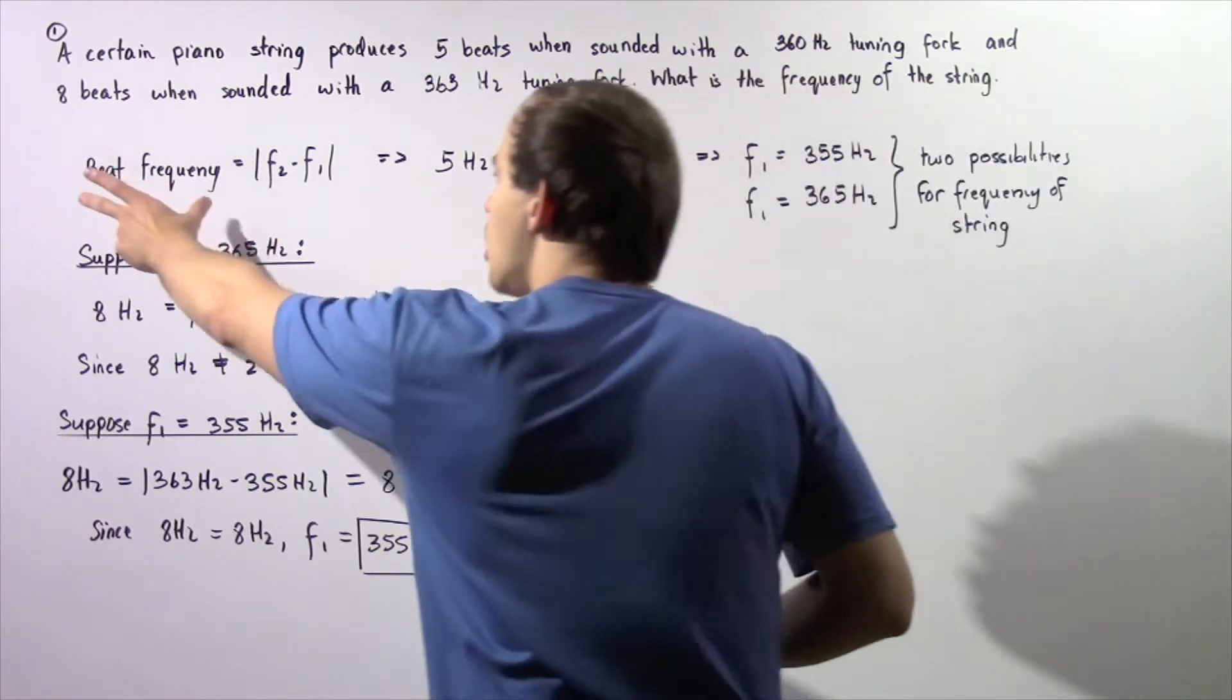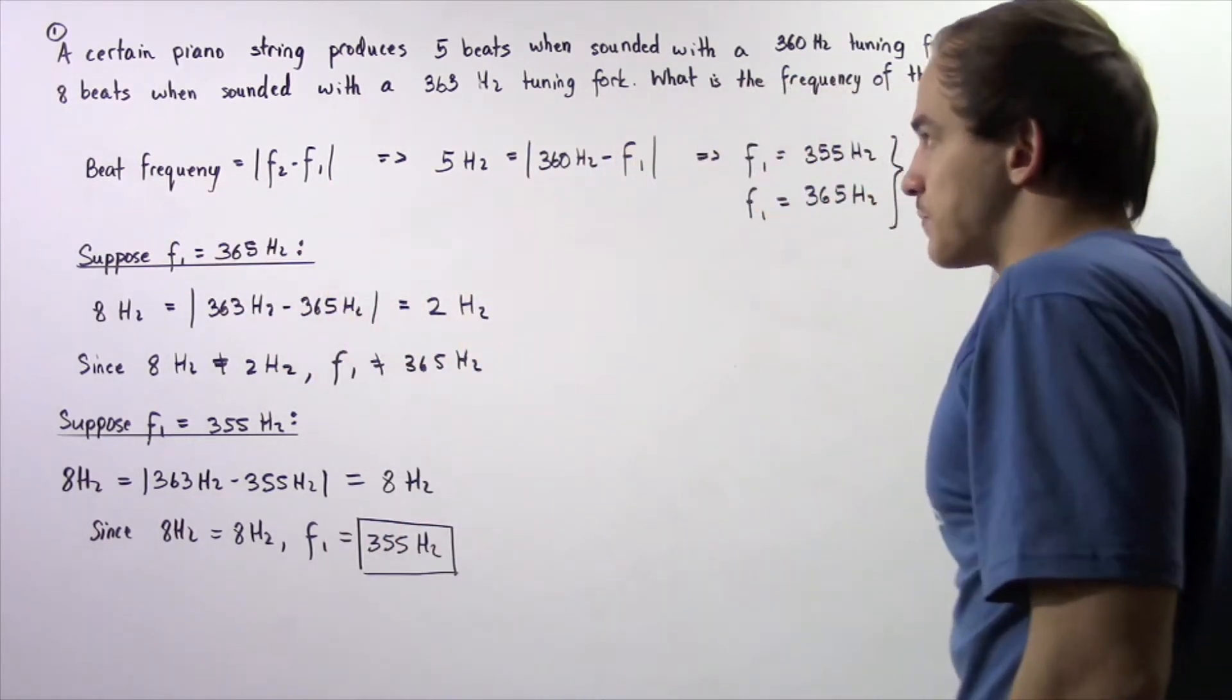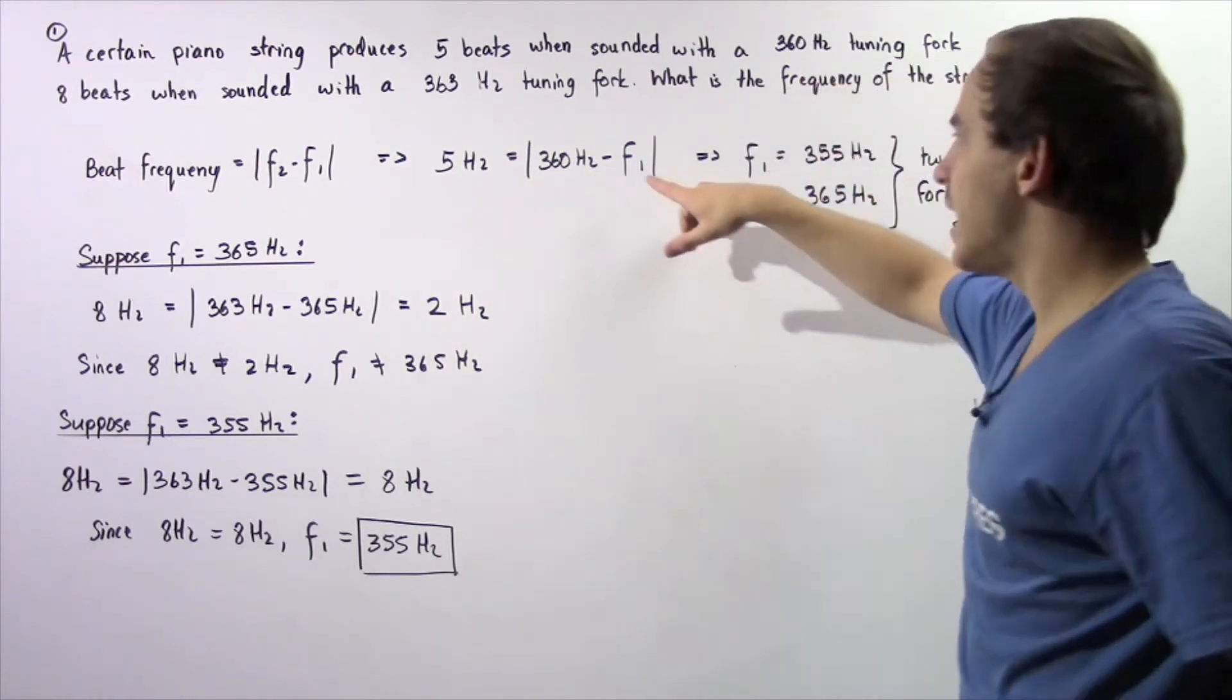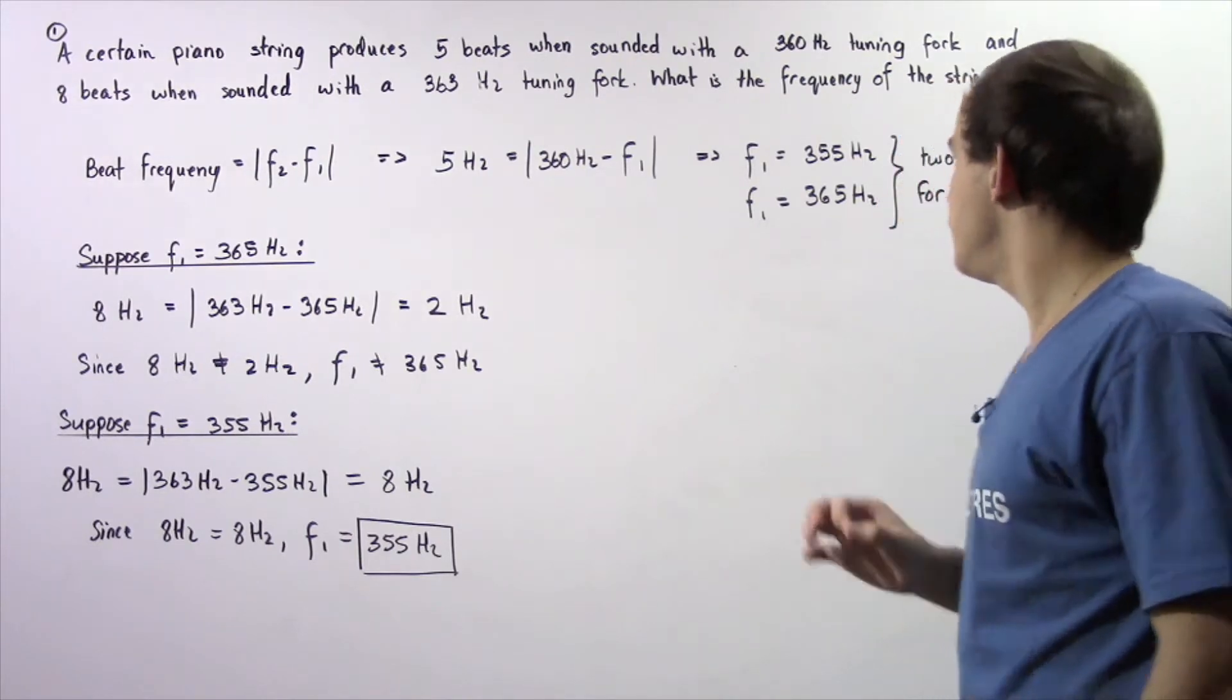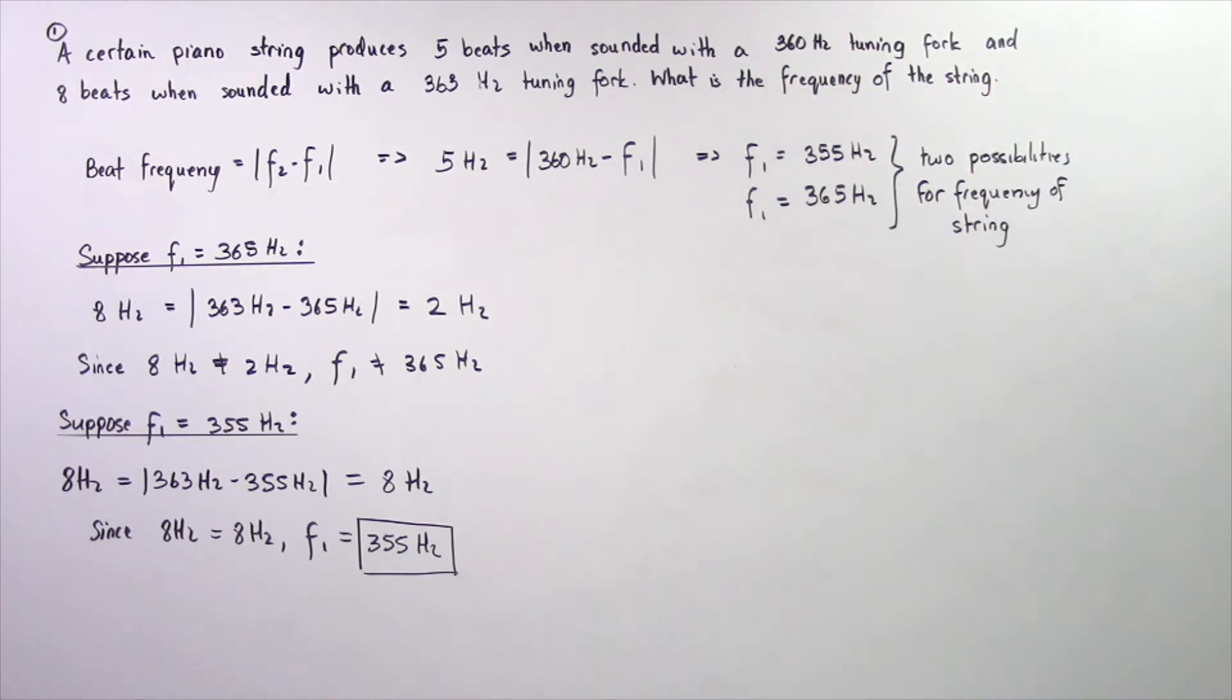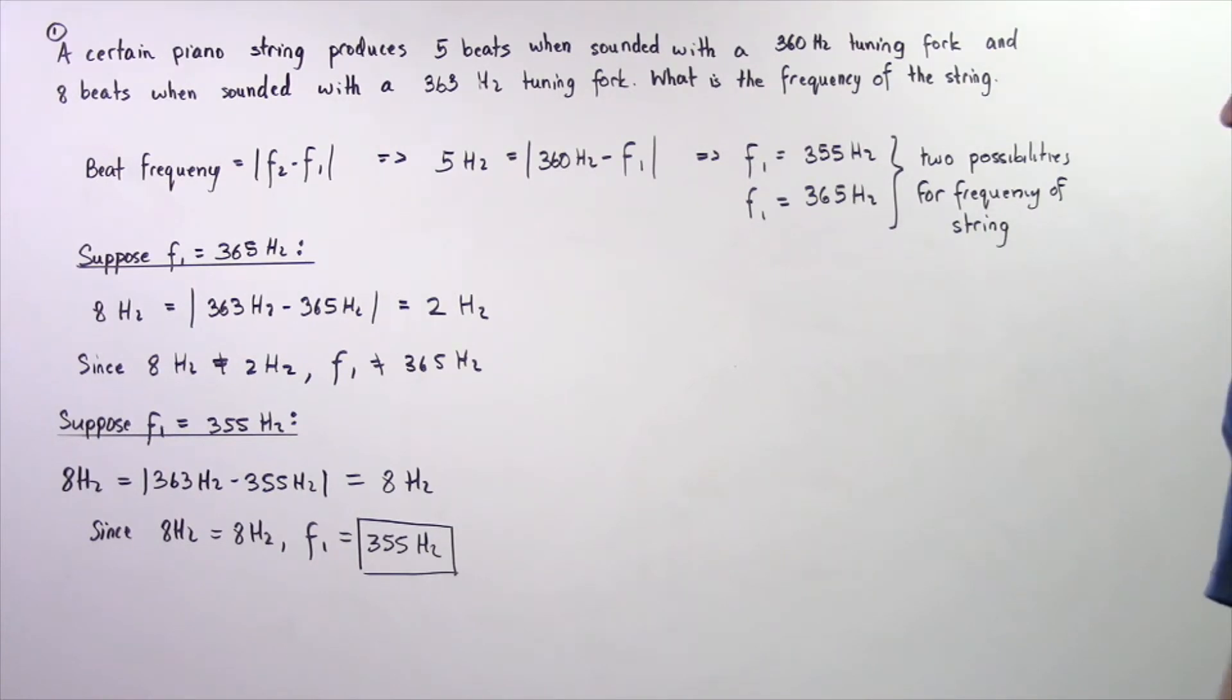So, notice we know that the beat frequency is 5 beats every single second. So the beat frequency is 5 hertz. Now, we are given that F2, the frequency of the tuning fork is 360. And we want to find what F1 is. So solving this equation, we have two different possibilities for the frequency of the string. We have either 355 hertz or 365 hertz. So, how exactly would we determine which one of these is the actual frequency of the piano string?